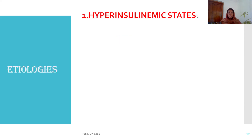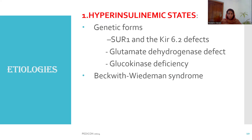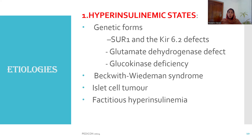What are the etiologies for pediatric hypoglycemia? Hyperinsulinism — with high insulin trying to reduce glucose — can be genetic, such as sulfonylurea receptor 1 (SUR1) and Kir6.2 defects, glutamate dehydrogenase defects, glucokinase deficiencies, or Beckwith-Wiedemann syndrome. Note that in Beckwith-Wiedemann syndrome you won't get a history of maternal diabetes. Other causes include islet cell tumors increasing insulin levels, or fictitious hyperinsulinism when insulin is administered exogenously.